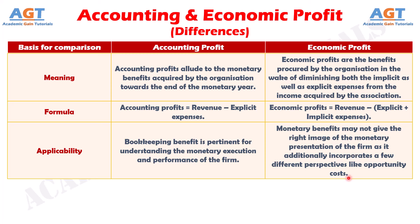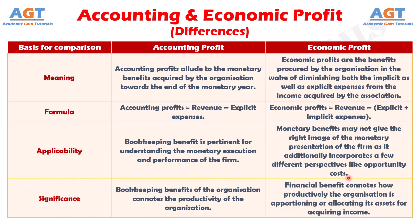And finally, difference number four: accounting profit connotes the productivity of the organization. On the other hand, economic profit connotes how productively the organization is allocating its assets for acquiring income.